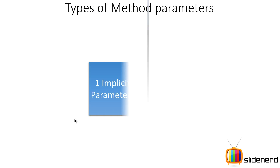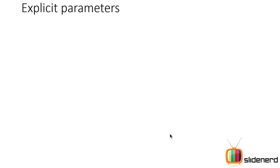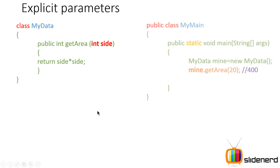First let's take a look at two types of parameters that a method can have: implicit parameters and explicit parameters. Here is a class called MyData. It has a single method inside called getArea, which takes an argument 'side' and returns side squared — the area of a square. Since side times side is an integer, the return type of the method is int.